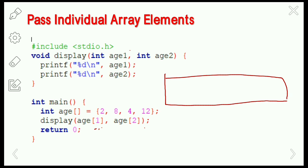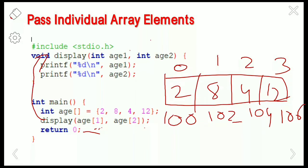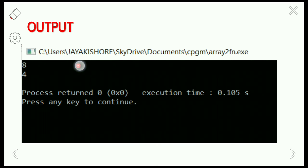The array is created with values 2, 8, 4, and so on. When the function is called, control passes to the called function. At subscript one, the value is 8, and at subscript two, the value is 4. These values are copied to the formal parameters and printed — h1 is 8 and h2 is 4. So in passing individual array elements, we pass the address of the particular individual element. The output displays the values 8 and 4.